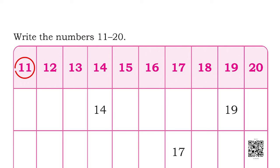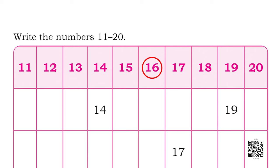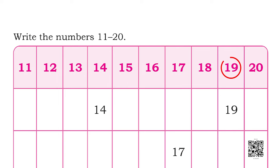What is the first number? 11. Next? 12. Go on: 13, 14, 15, 16, 17, 18, 19, and lastly 20. Wow! So we have learnt numbers bigger than 10. We first explored them with oranges, then Arnav has helped us in writing them.